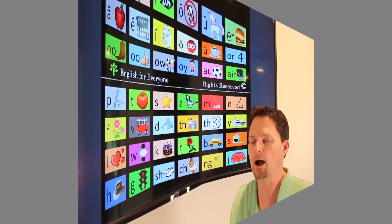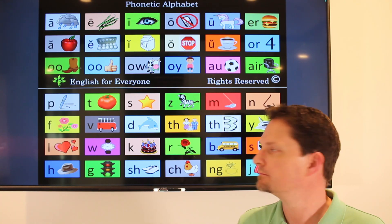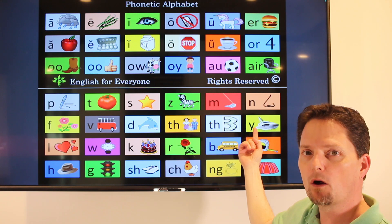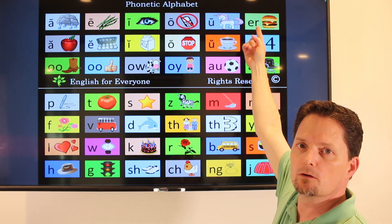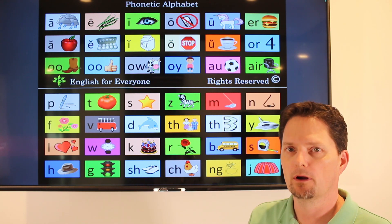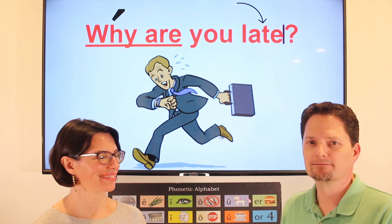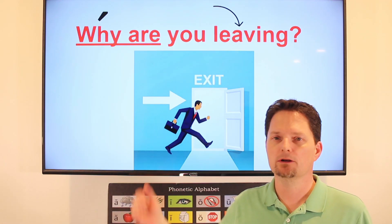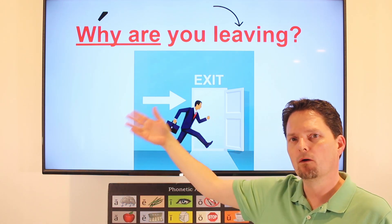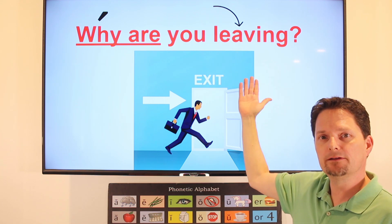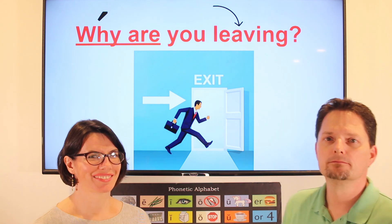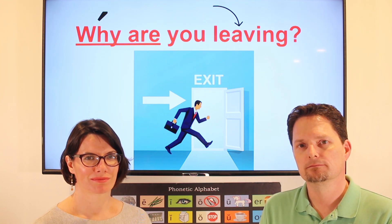Let's look at the pronunciation of 'wire.' 'Why are' pronounced together: wire, wire. Why are you late? Ask the question: Why are you late? — I'm sorry, there was a lot of traffic. Another example of 'why are' pronunciation: wire, wire. Why are you leaving? Why are you leaving? We can pronounce it 'leaving' or 'leaving.' Why are you leaving? — Oh, my wife called, I got to go.